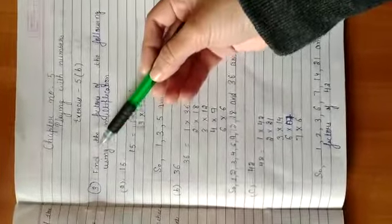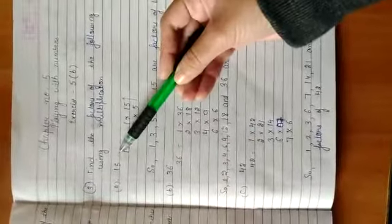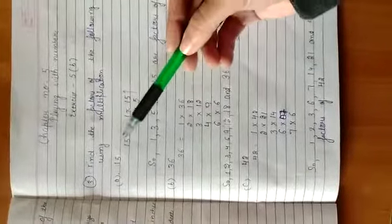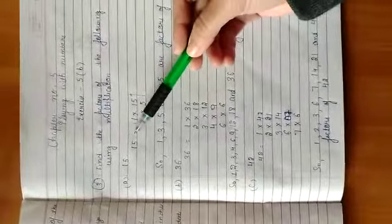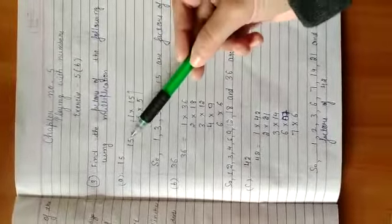Exercise 5b question number 3: find the factors of the following using multiplication. First part, 15. We have to write the factors of 15 by using multiplication. As I already discussed with you, any number can be written as a product of at least 2 numbers.